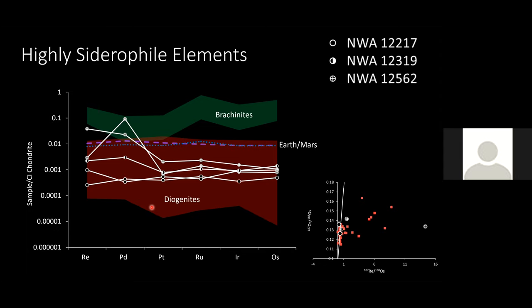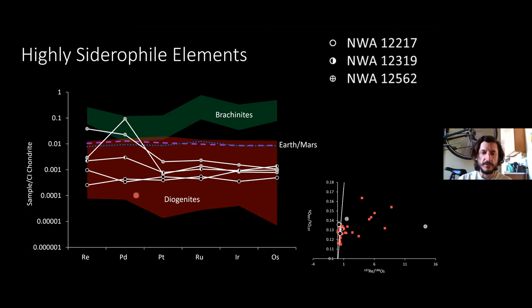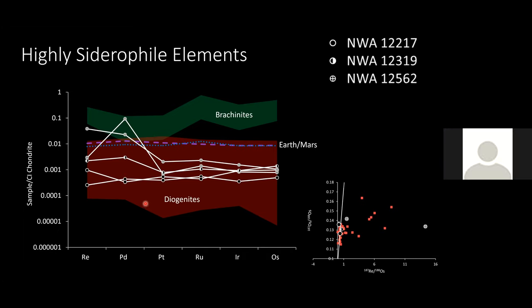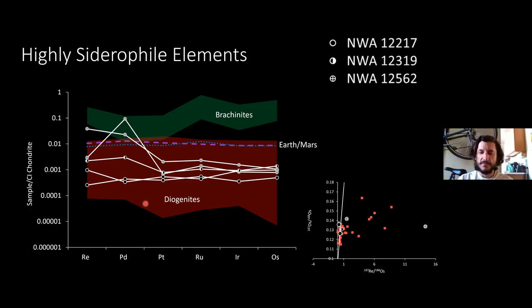A question about how long a meteorite has to be on Earth to show these kinds of enrichments: given the HSE content is so low in these meteorites, you really don't need much to cause this sort of effect. The weathering level on 12562 came in as low, and all of them have similar weathering levels — they all have fusion crust. It sounds like a paper topic or a re-measurement may be warranted.